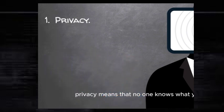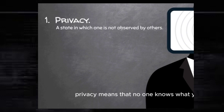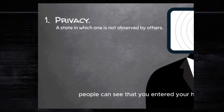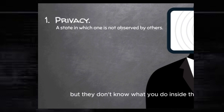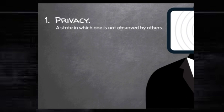Privacy means that no one knows what you do. For example, when you go and enter your house, people can see that you entered your house, but they don't know what you do inside the house. Therefore, you're private.